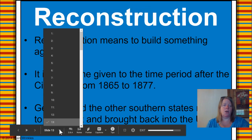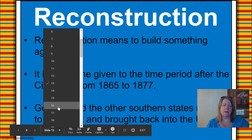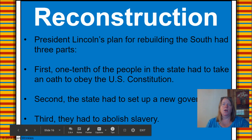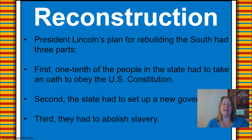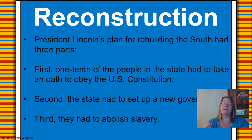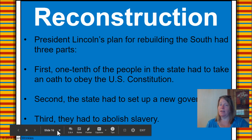We're going to slide over to slide 16. President Lincoln's plan for rebuilding the South had three parts: first, one-tenth of the people in the state had to take an oath to obey the U.S. Constitution; second, the state had to set up a new government; and third, they had to abolish slavery. Do you think they were successful at that during the Reconstruction Era?